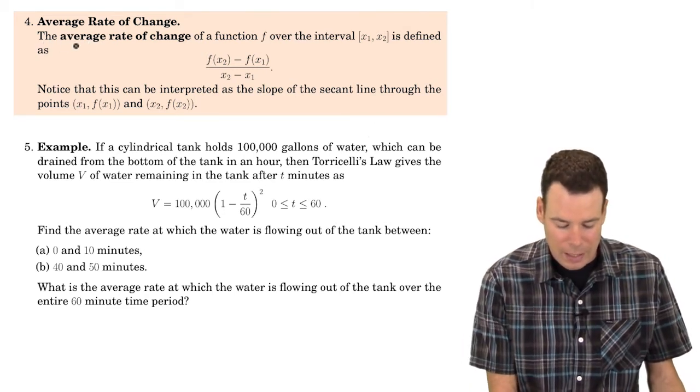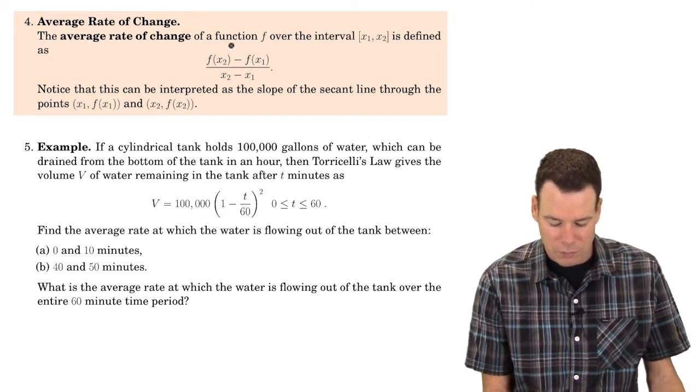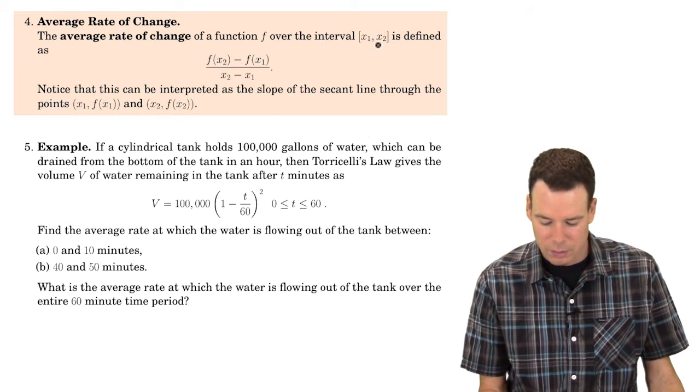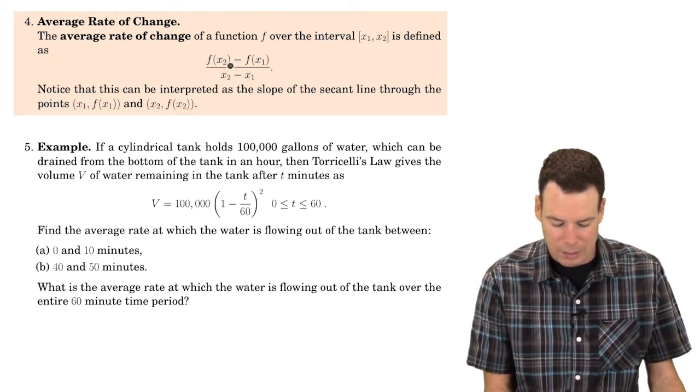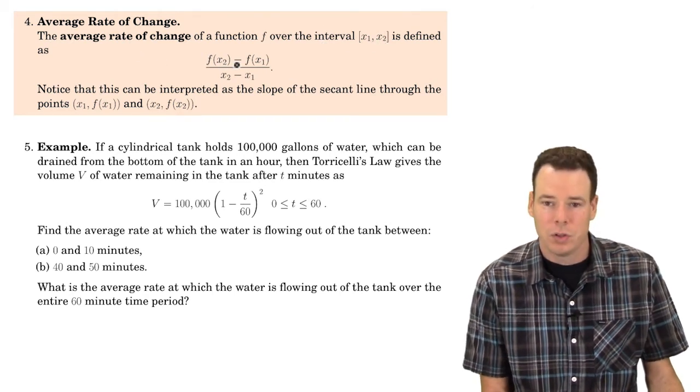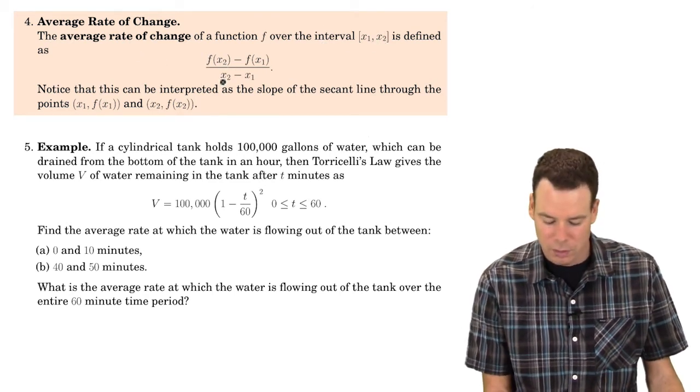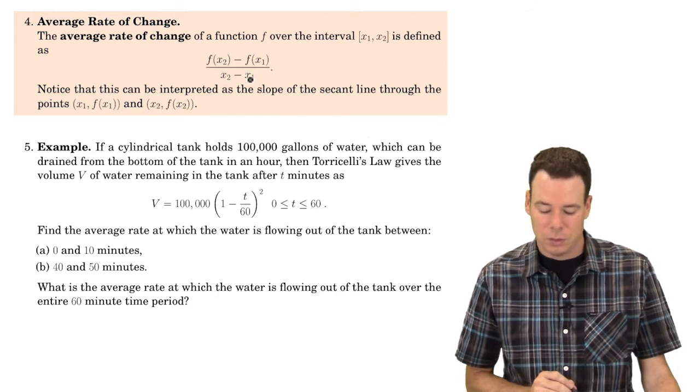The average rate of change of a function f over the interval x1 to x2 is defined as f of x2 minus f of x1, all over x2 minus x1.